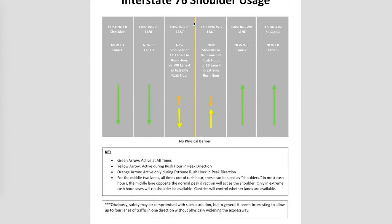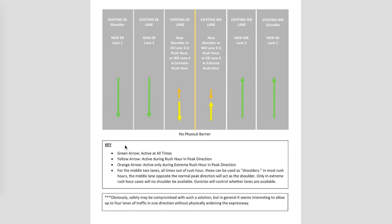Importantly, there's no physical barrier between the lanes of traffic, so the shoulders can be used as two-way shoulders in rush hour, or you could have four travel lanes — it could just be a marked yellow line. In non-peak times there's still enough room between the two directions to be reasonably safe. The green arrow is active at all times, the yellow arrow is active during rush hour only in the peak direction, and the orange arrow is active only during extreme rush hour. Gantries will control which lanes are available.